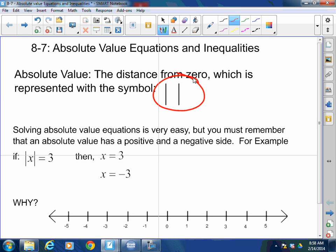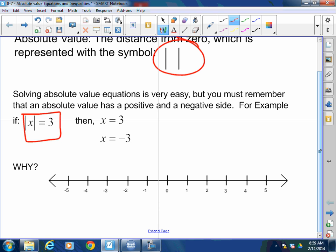When you're solving the absolute value equation, it's very easy, but you must remember that absolute value has a positive and a negative side. For example, if I tell you the absolute value of x is 3, well, x can be 3 or negative 3 because the absolute value of 3 is 3 and the absolute value of negative 3 is 3. Why?